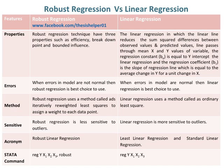When errors in the model are not normal, then robust regression is the best choice to use. Whereas when errors in the model are normal, then linear regression is the best choice to use.